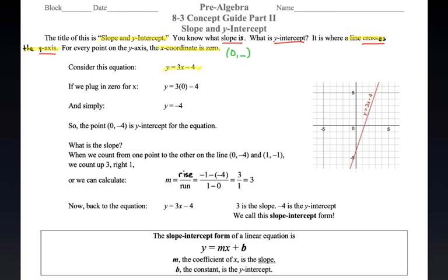So let's look at an equation here, y equals 3x minus 4. If we plug in 0 for x to find the intercept, we will get 3 times 0, which is 0, minus 4 is negative 4. So y equals negative 4. So the point 0 comma negative 4 is the y-intercept. That's where this thing crosses the y-axis.